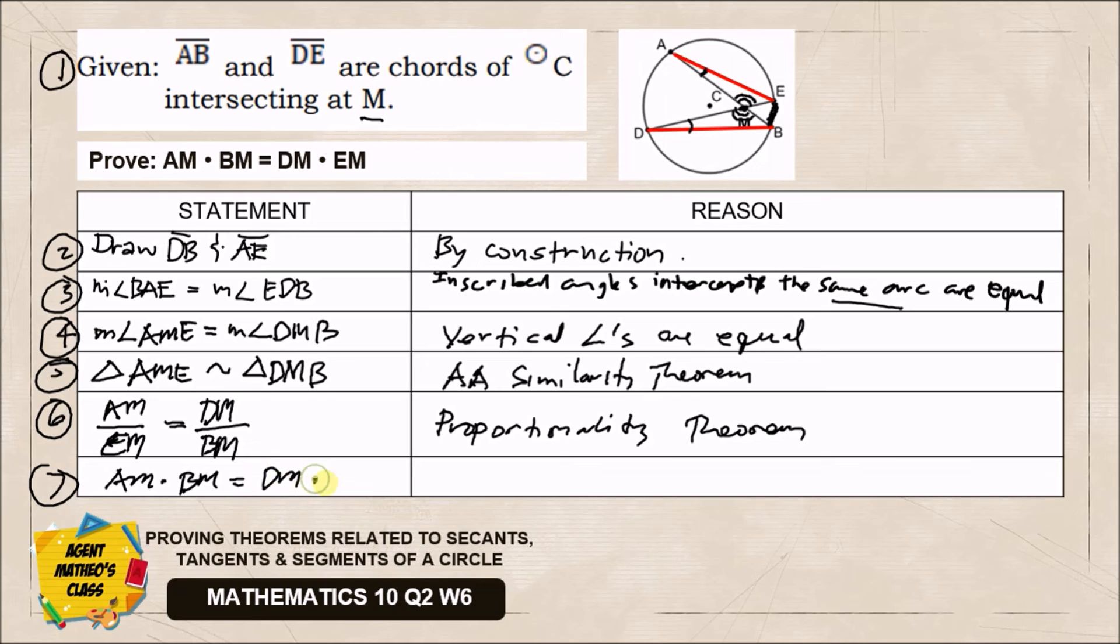We can cross multiply: EM times BM equals DM times AM. We can use multiplication property as the reason, because we can multiply EM and BM on both left and right sides. You could also say cross multiplication is a favorable reason for our number six going to number seven. With that, we've proven the theorem - we got equal products from the two chords intersecting in our circle.